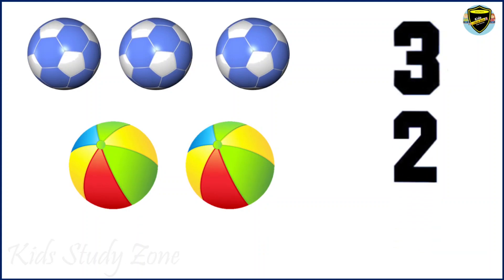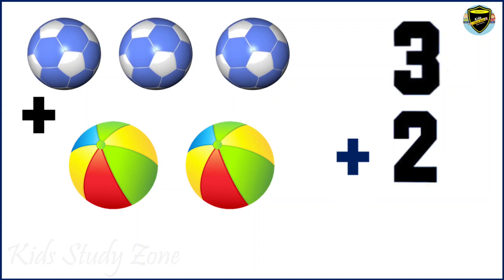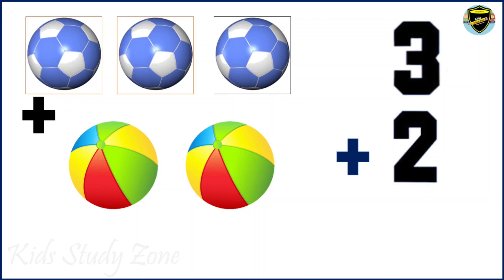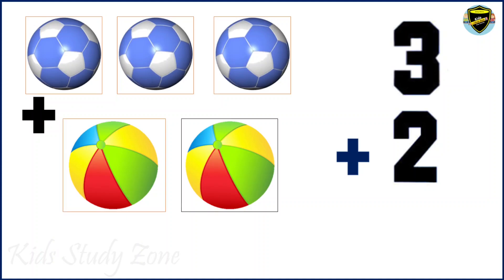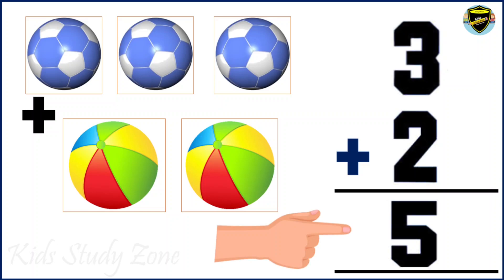Sign of addition is plus. Now we will add these 2 numbers. Let's do this once again. Let's count the balls: 1, 2, 3, 4, 5. So we get the answer 5 balls.